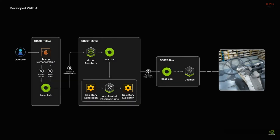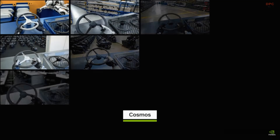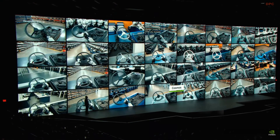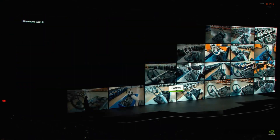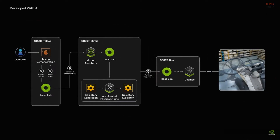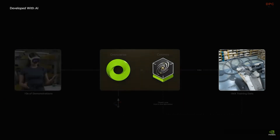Next, they use Groot Gen, built on Omniverse and Cosmos, for domain randomization and 3D to real upscaling, generating an exponentially larger dataset.